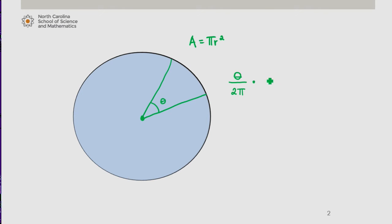Therefore, the area of this sector is theta over 2π times π R squared. So the area of this sector is therefore theta over 2 times R squared.